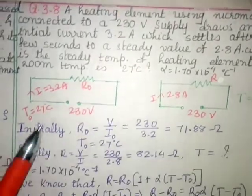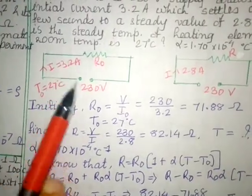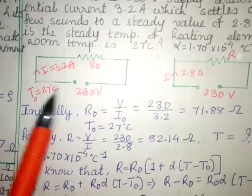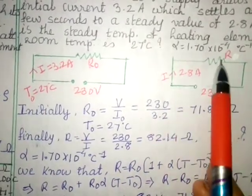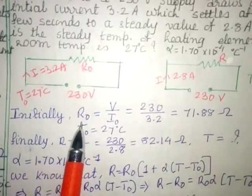So this is the first part. Initially, current is 3.2A. This is the battery and the temperature is given to you. But after some time the current is steady at 2.8. So that is the situation and you have to find what is T value.